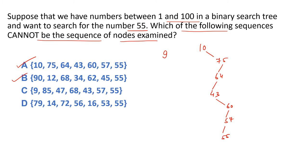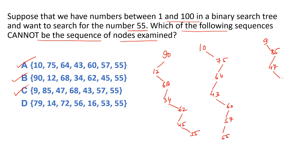B option mein: 90 → 12 (left) → 68 (right) → 34 (left) → 62 (right) → 45 (left) → 55 (right se bada) — yeh bhi sahih hai. C option mein: 9, 85, 47, 68 ke baad 43 aata hai. 43 ko 68 ke left mein lagana hoga, lekin yeh 47 ka right subtree hai — toh 43 yahaan nahi ho sakta. Iska matlab option C galat hai — yeh sequence of nodes valid nahi hai.